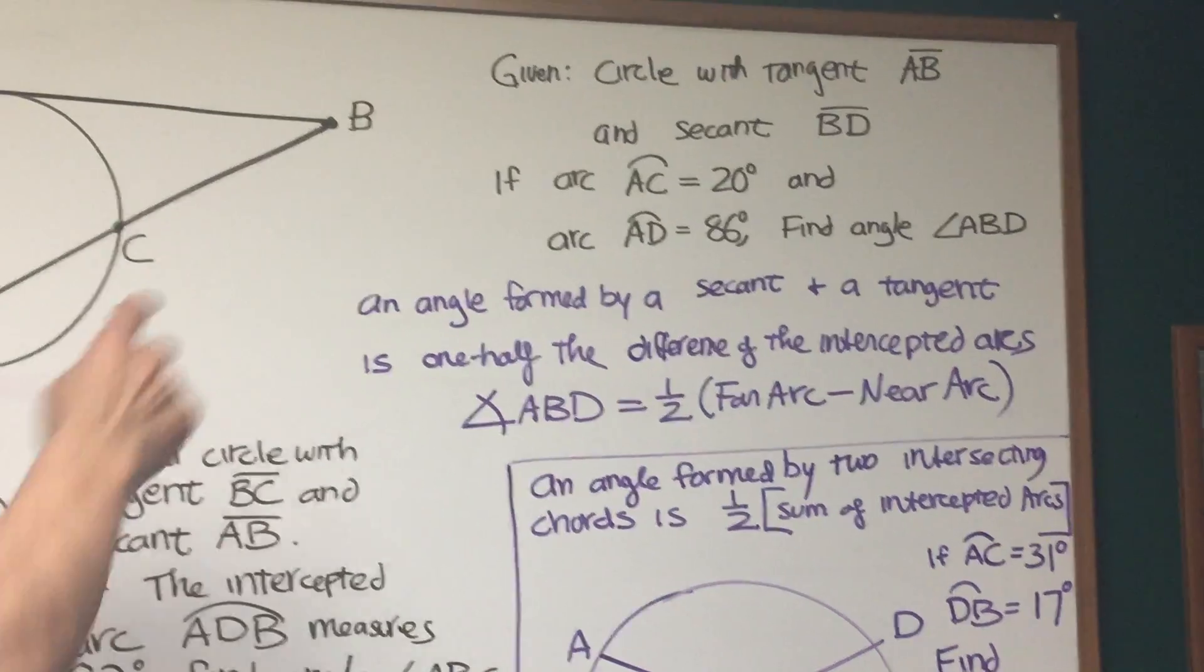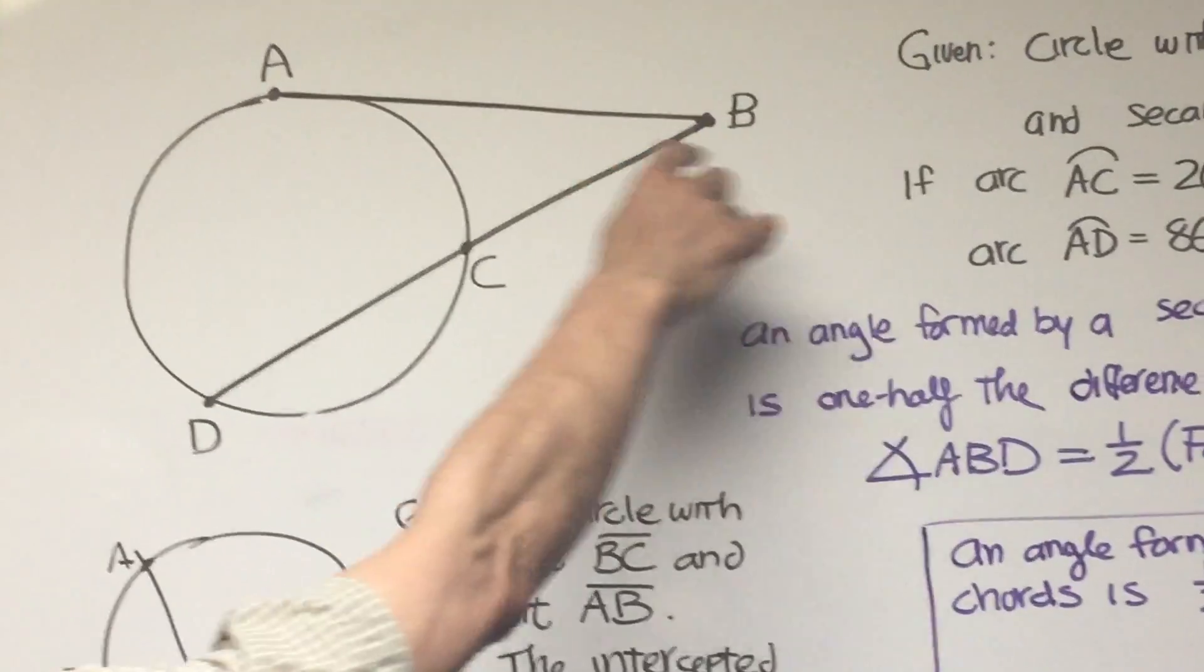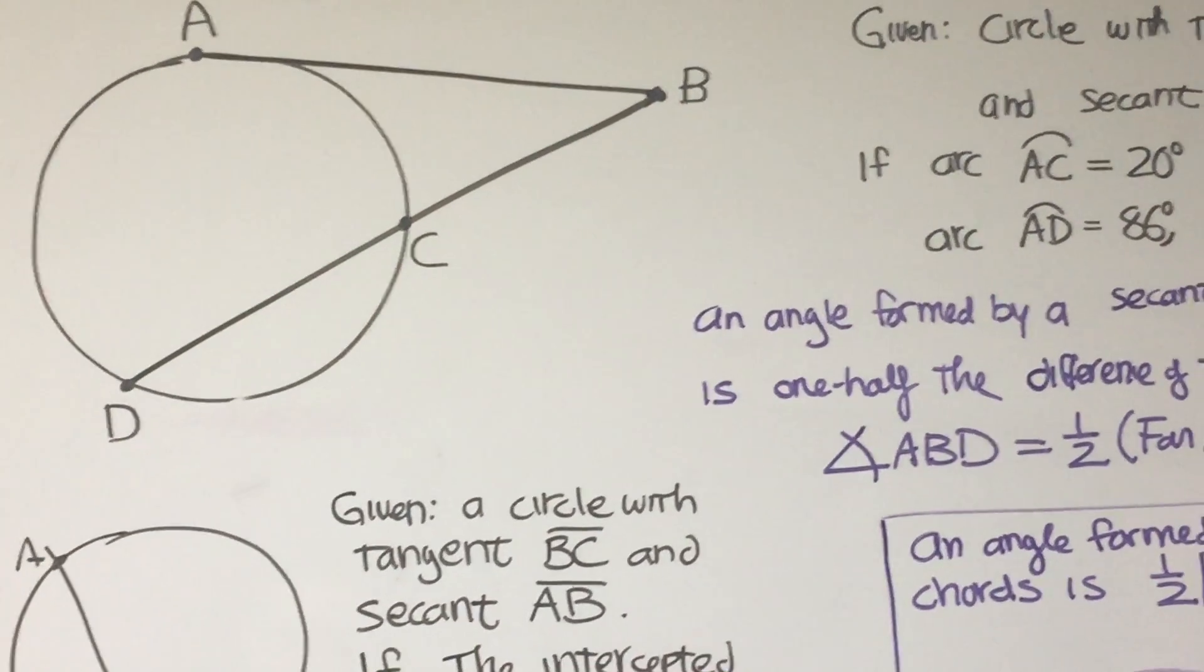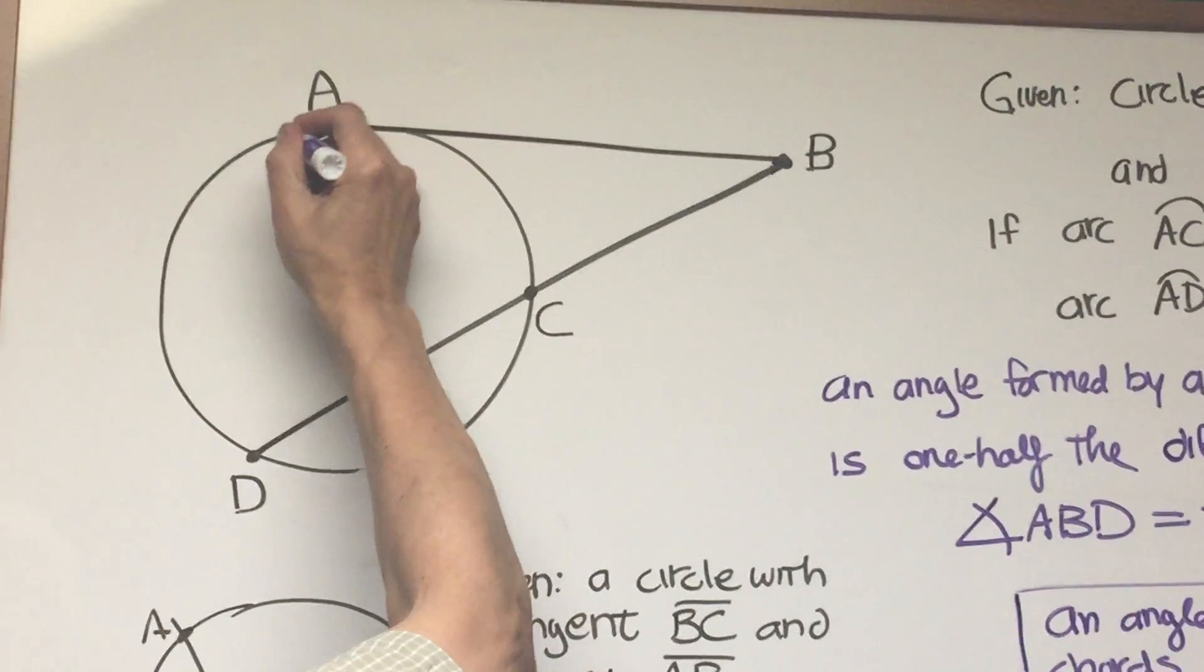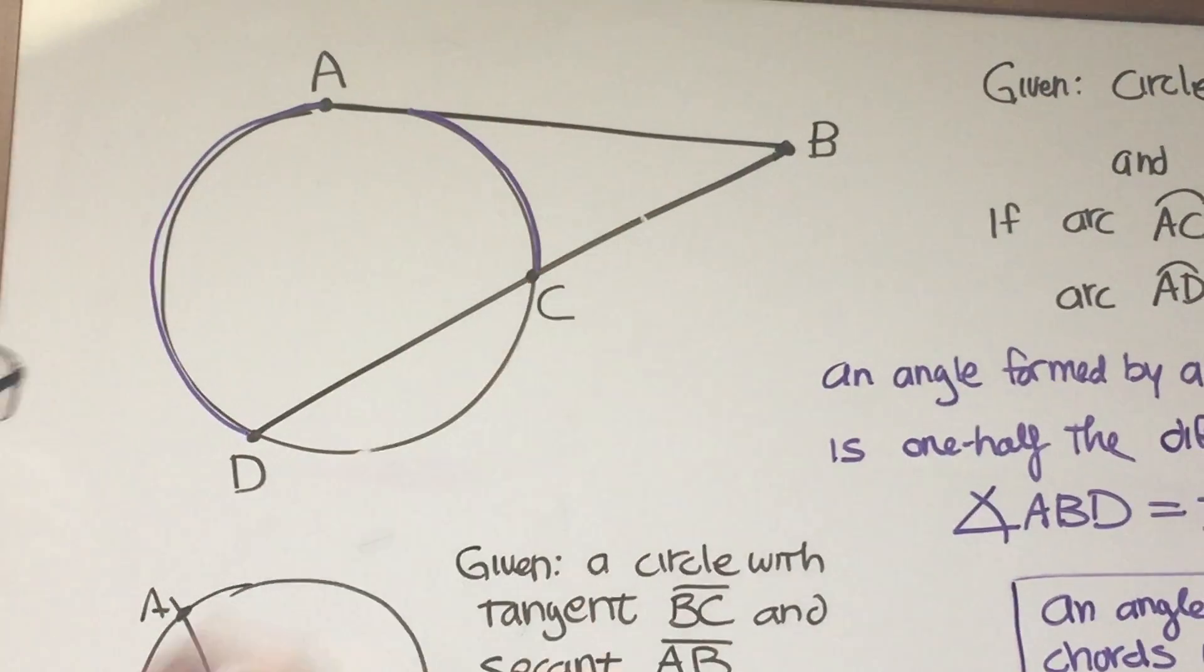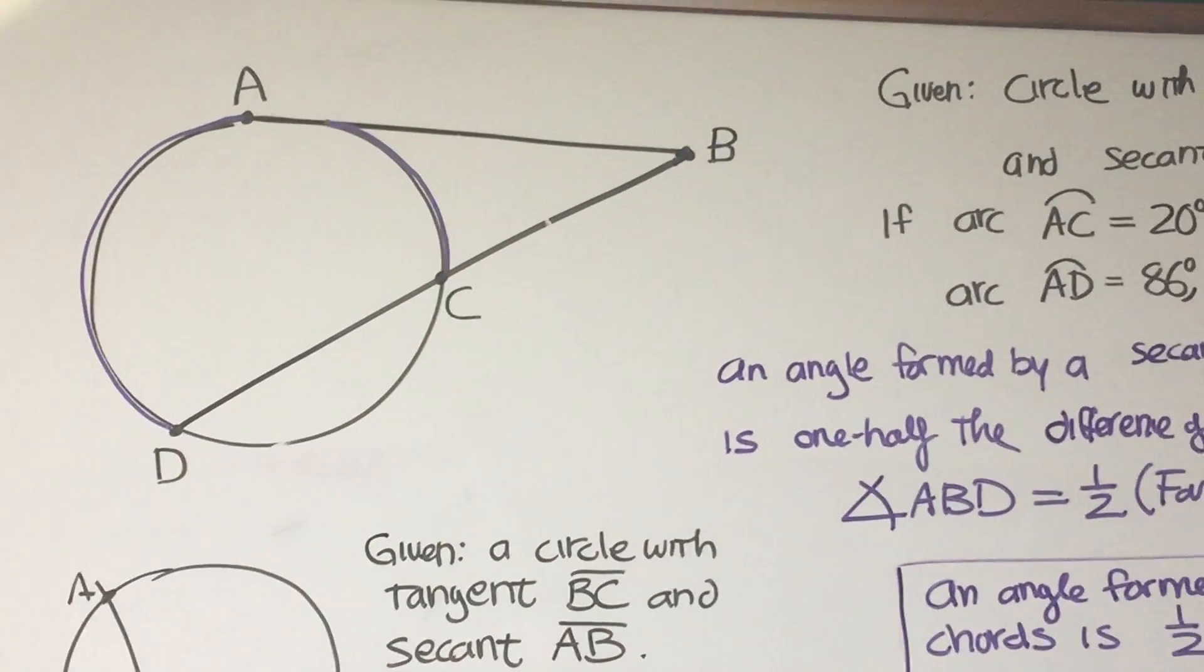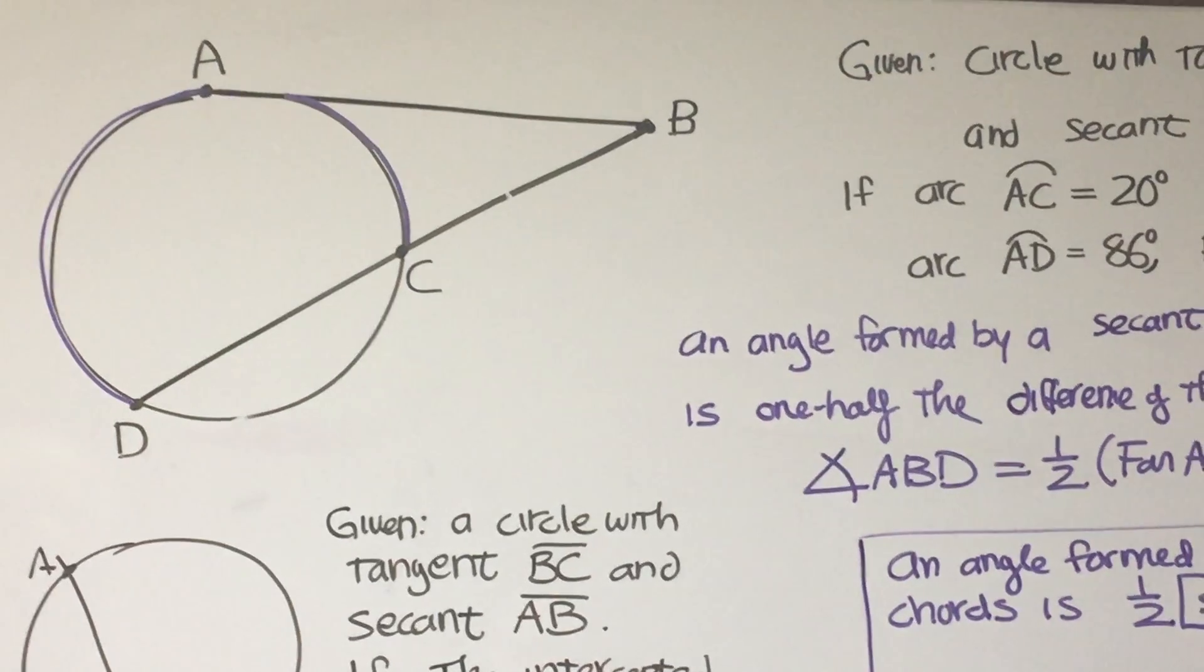So first of all, what is an intercepted arc? Here, look at this diagram here. Here I have AB which is tangent to the circle and BD which is a secant that cuts right through the circle and the intercepted arcs are this. That section right there is one intercepted arc and here is the second intercepted arc. And basically what an intercepted arc is, if you look at a slice of pizza, it's the edge around the crust. That's an intercepted arc.